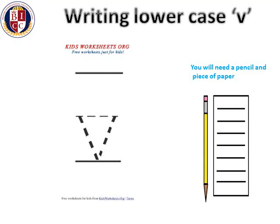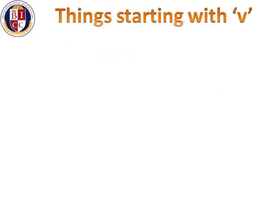Same again, but looking at how to write lowercase v. Are you ready? Remember, because it's a lowercase we have to make it smaller than the capital case. You start in the top left, you go down and stop, then up to the top right. One more time — you start from the top left, you go down and stop, then up to the top right. Well done!